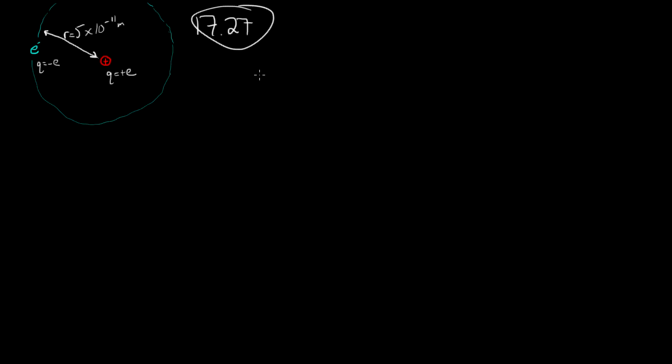Now, at the end of the problem it says to give all these answers in electron volts and in joules. I'm going to skip that. I'm just going to give it in electron volts because that's easier. If you want to convert, one electron volt is equal to 1.6 times 10 to the minus 19 joules. So there you go. Knock yourself out.